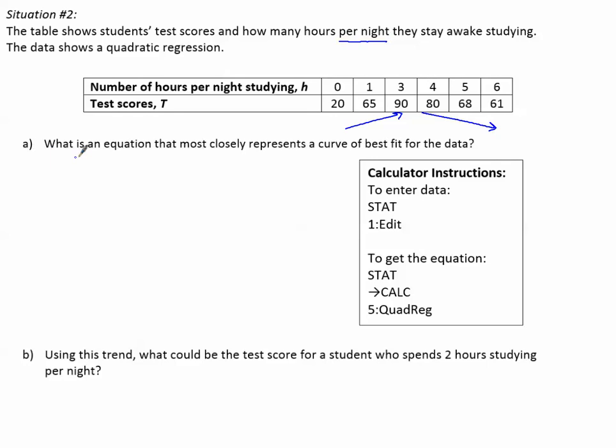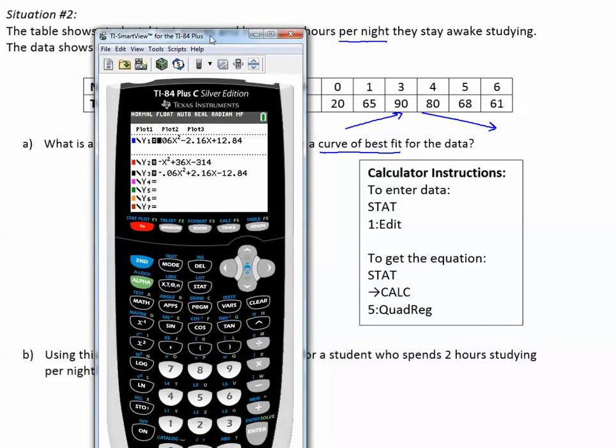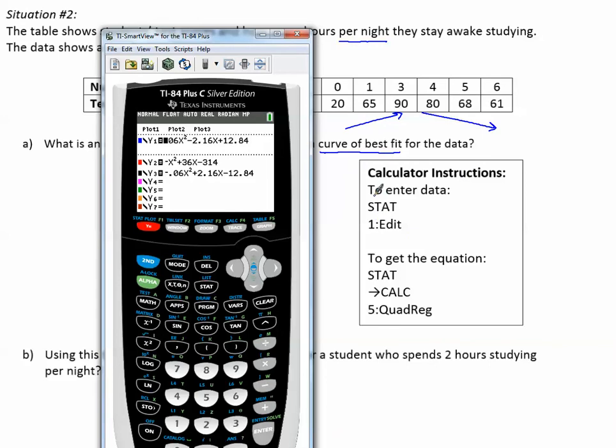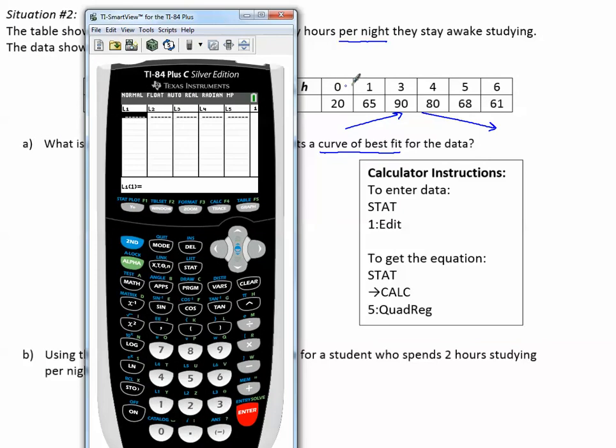Part A. What is an equation that most closely represents a curve of best fit for the data? We've done this for line of best fit, similar calculator instructions. Let's review what we need to do for curve of best fit. So our calculator instructions tell us we need to enter data. We're going to go to STAT and then choose number one for EDIT.